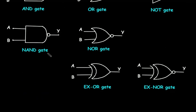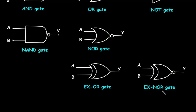This is the symbol for NAND gate, also called the NOT AND gate — there are two inputs and one output. This is the symbol for NOR gate, also called the NOT OR gate — there are two inputs and one output. This is the symbol for XOR gate, also called the EXCLUSIVE OR gate. This is the symbol for XNOR gate, also called the EXCLUSIVE NOT OR gate — there are two inputs and only one output.